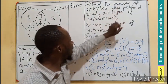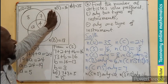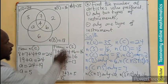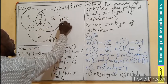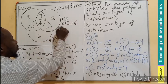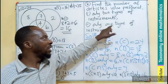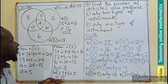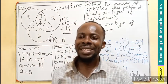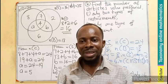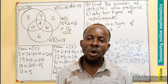For part b(ii), we find artists who prefer only one type of instrument: cymbal only (8), saxophone only (2), and bongo only (6). Adding: 8 + 2 + 6 = 16. So 16 artists prefer only one type of instrument. This answers all the questions on the first part of the WASSCE 2023 September paper. Share this video, like, comment, and subscribe. We'll continue all the way to question 13.